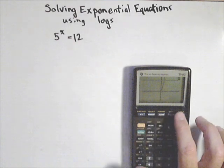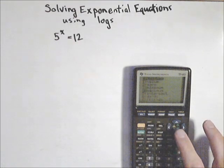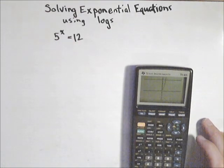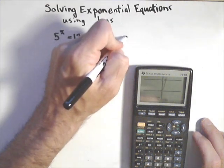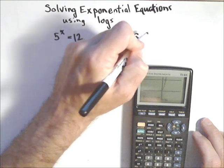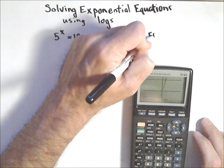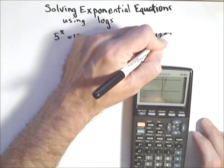So I would just do second, calculate, intersect, and then enter, enter, enter, and I get a solution of about, let's record this, 1.54396.